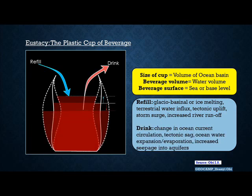The drink case is the flip side, where we could have changes in ocean current circulation, tectonic sag, ocean water expansion or evaporation, increased seepages, and all the other processes. The idea is these are all processes that could lead to either a change in the volume of water, or a change in the size of the container — in this case, the size of the cup.